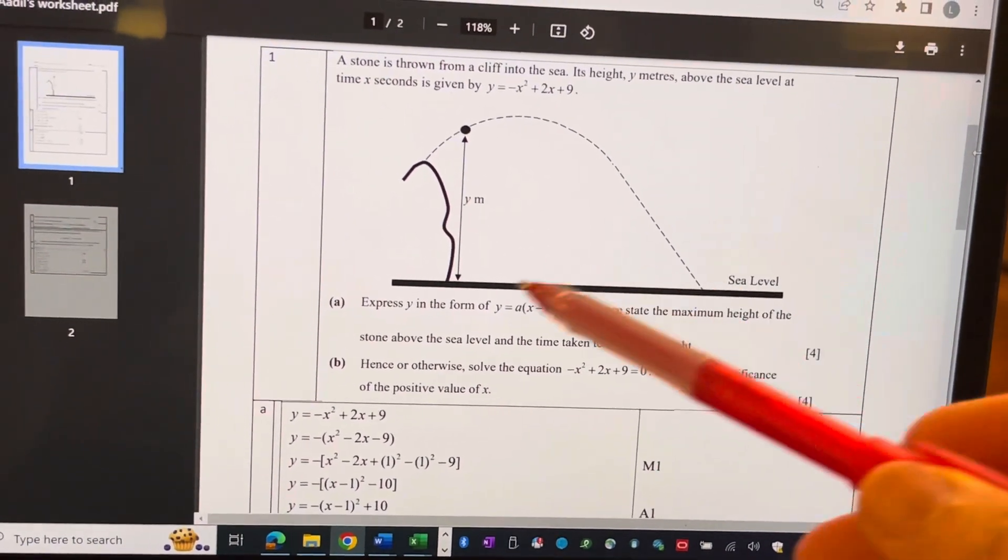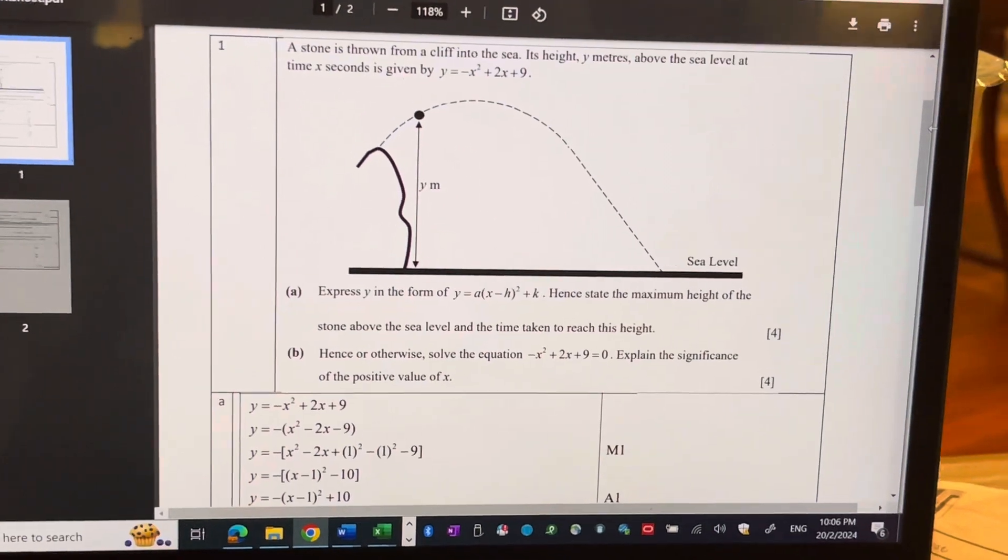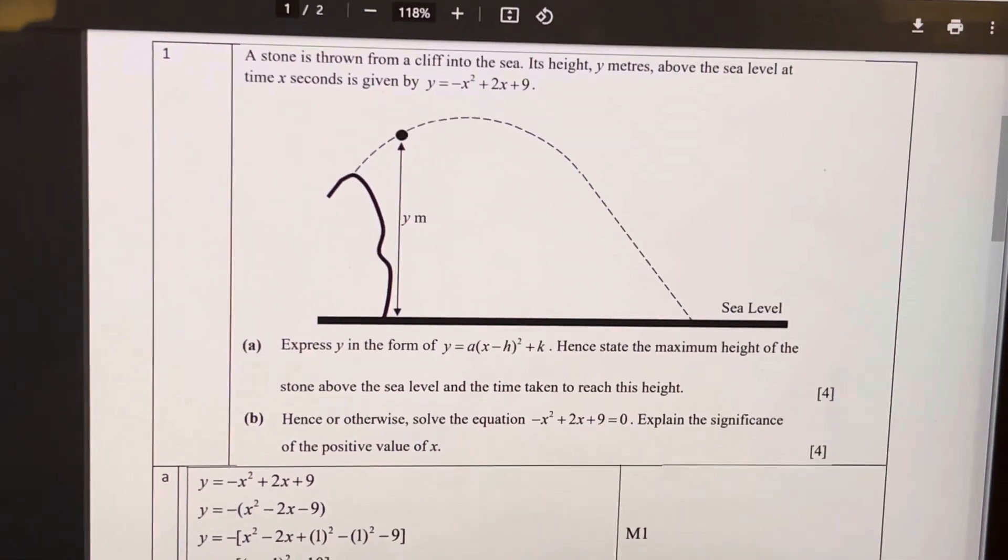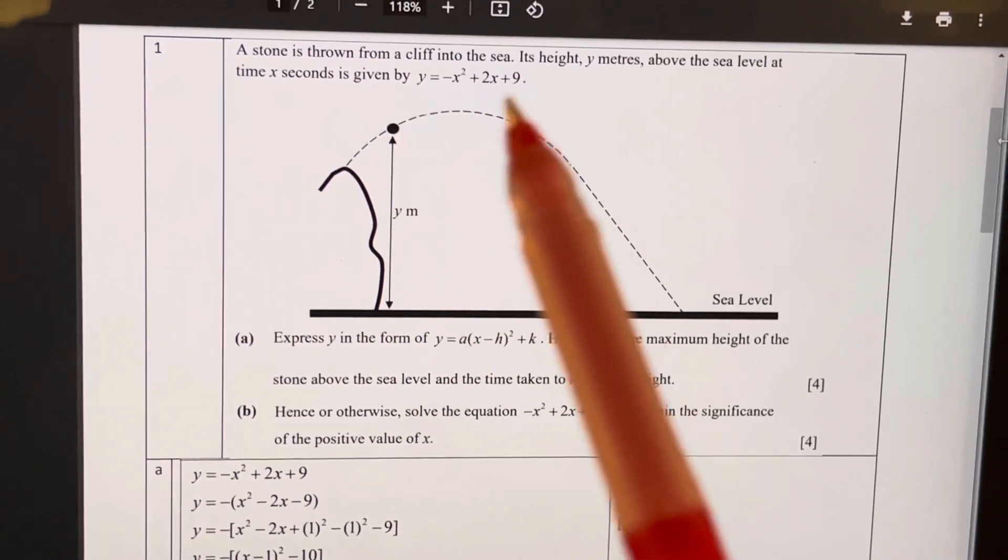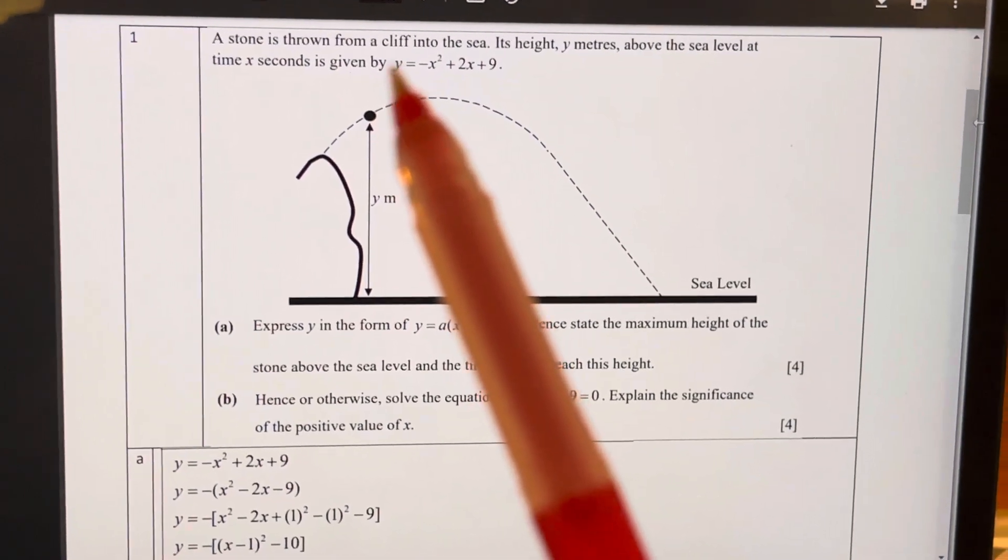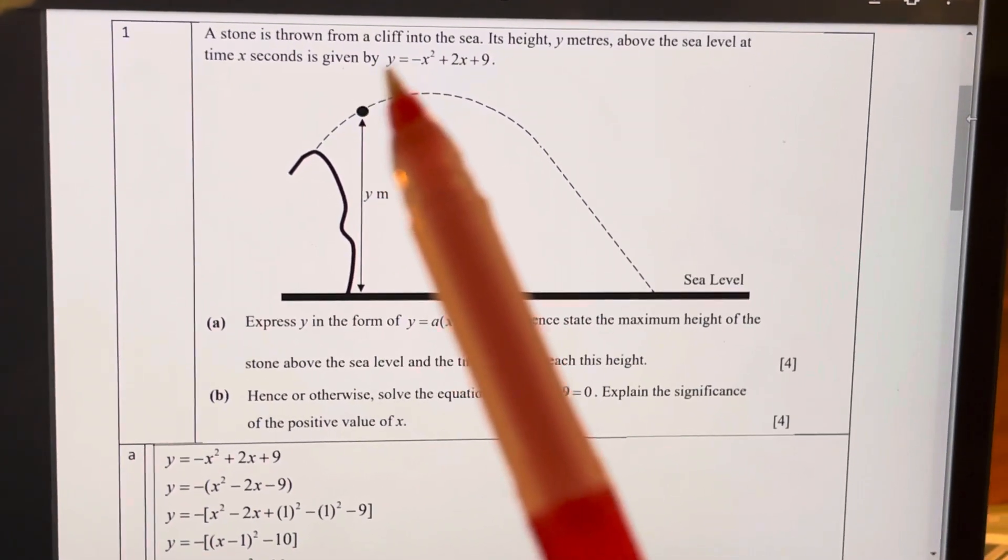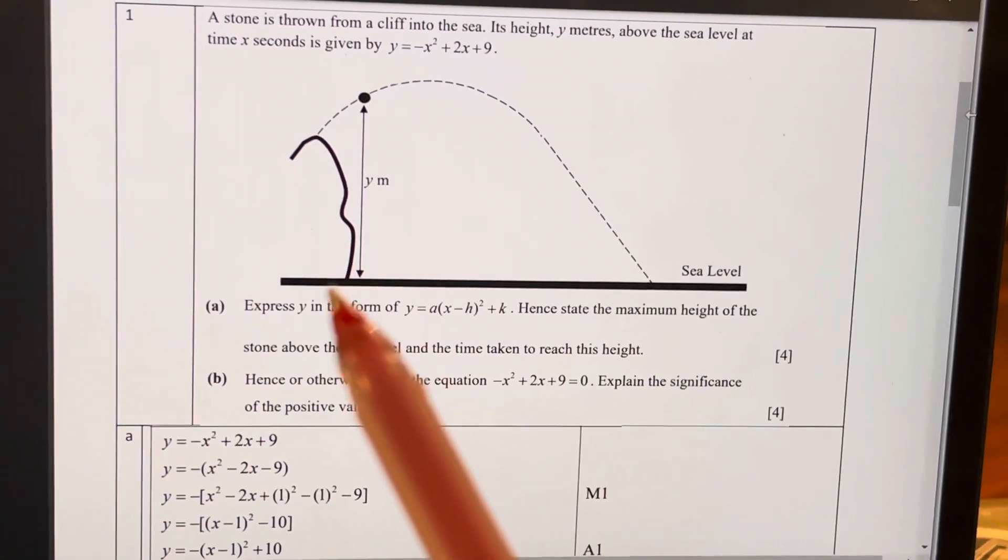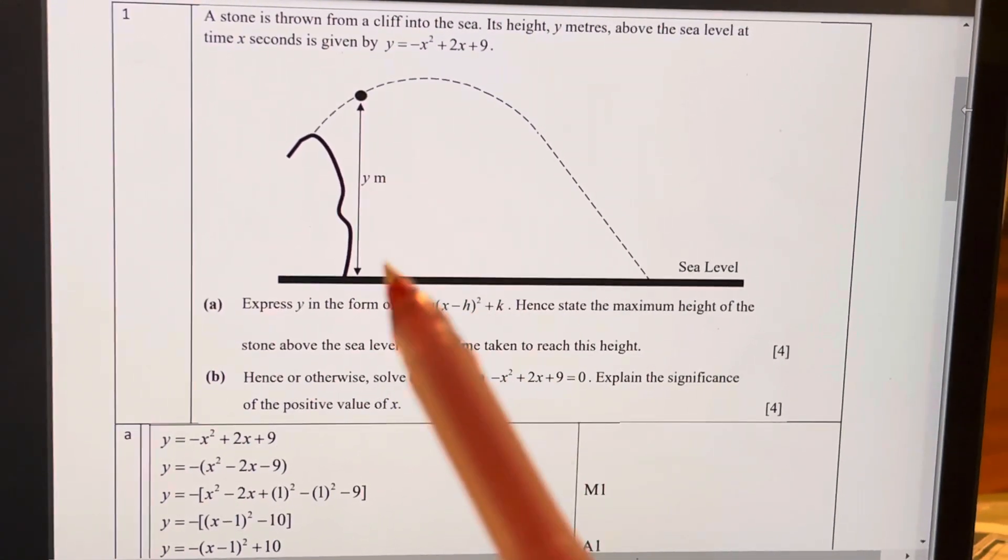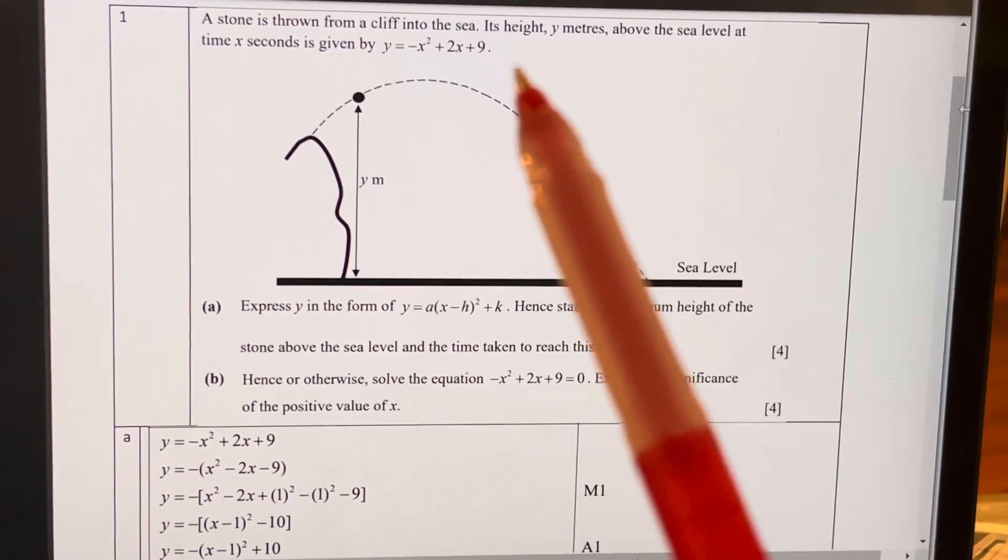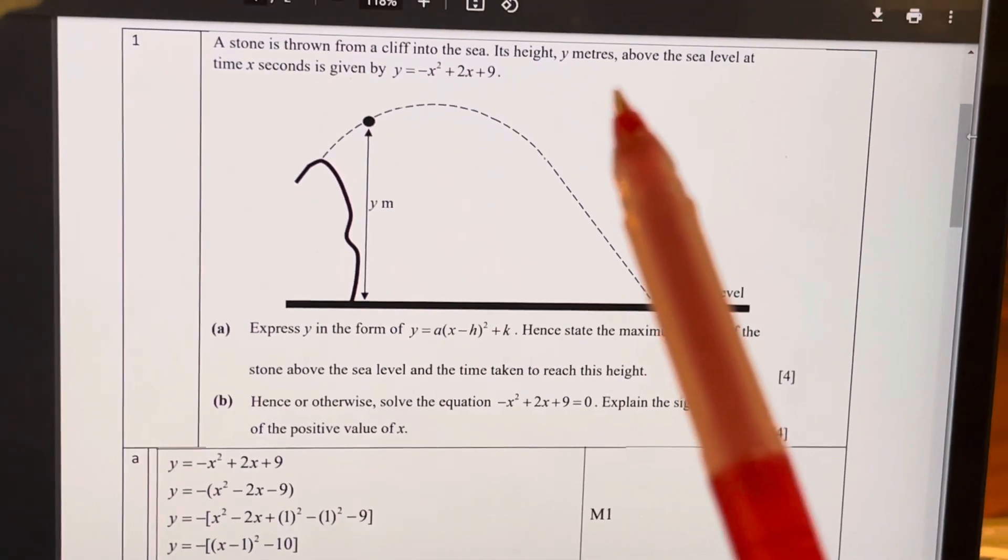Now, the other thing is when you have this kind of real-world context questions, you must always read the question carefully and see what the X and Y represents. They may not use Y, they may not use X, they may use T, they may use W, H, P, or whatever. So you have to be very clear what Y represents. And in this case, the Y represents the height above the sea level of the stone.